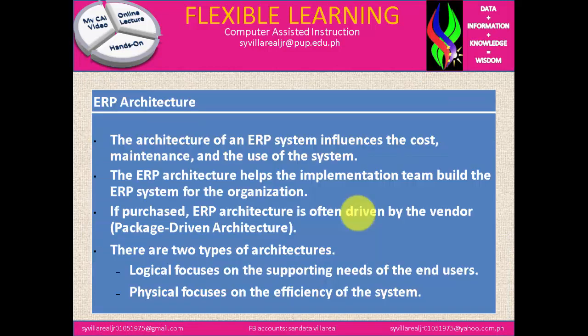Next, ERP architecture. The architecture of an ERP system influences the cost, maintenance, and use of the system. The ERP architecture helps the implementation team build the ERP system for the organization. If purchased, ERP architecture is often driven by the vendor — package-driven architecture. There are two types of architecture: logical focuses and physical focuses. The logical focuses on the supporting needs of the end user, and the physical focuses on the efficiency of the system.